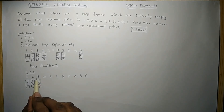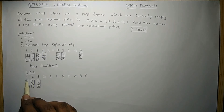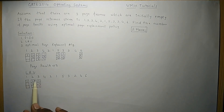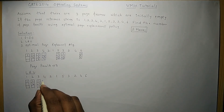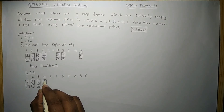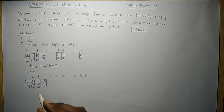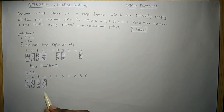The next reference is for page 4, which is not available, so we look at past references to find the least recently used page. The order of recent use was: 3 most recent, then 2, then 1 — so page 1 was used least recently. Page 1 is replaced with page 4. The frames now hold 4, 2, and 3. The next reference is for page 2, which is already available — no page fault.